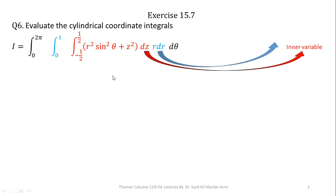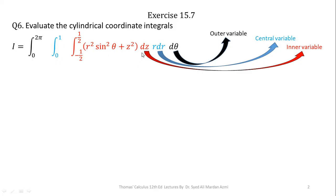In this question, our most inner variable is Z, our central variable is R, and our outer variable is Theta. In the cylindrical coordinate system, this ordering is fixed — we will always perform integration first with respect to Z, then with respect to R, and then with respect to Theta. The limits of Z are minus 1/2 to 1/2, limits of R are 0 to 1, and limits of Theta are 0 to 2π.